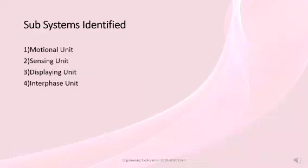With the help of functional clustering, we identified four subsystems: the emotional unit, sensing unit, displaying unit, and interface unit. This identification is very important as it helps in building our prototype very easily.